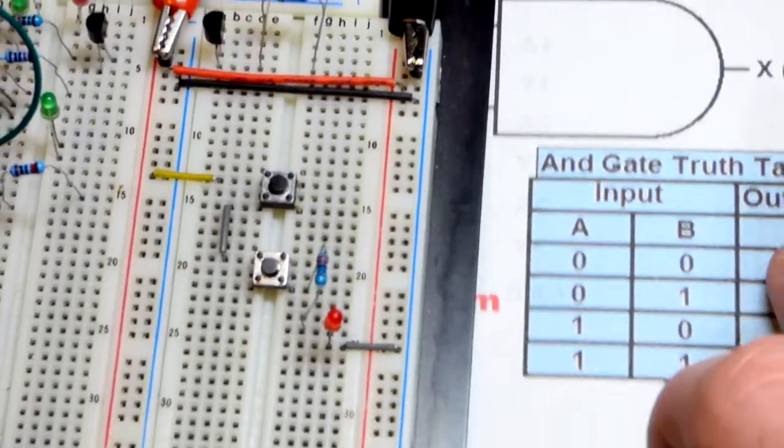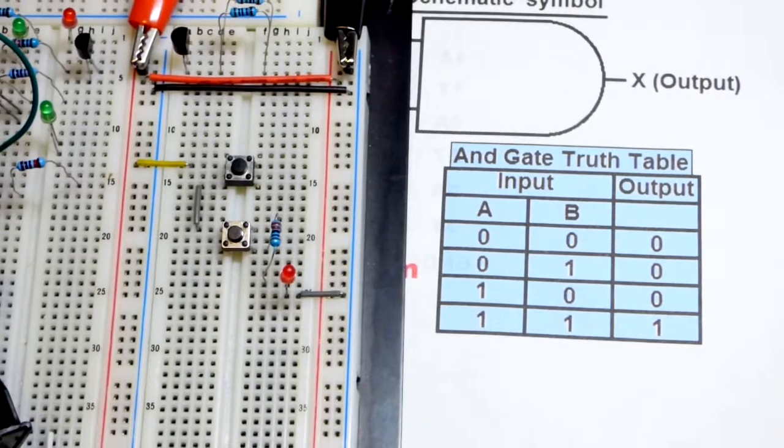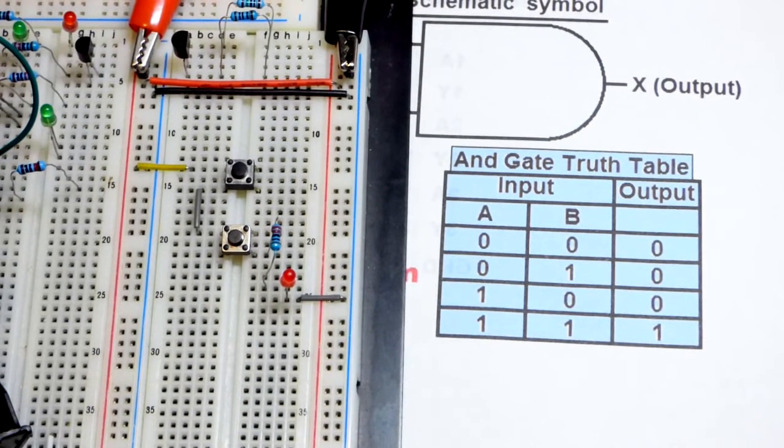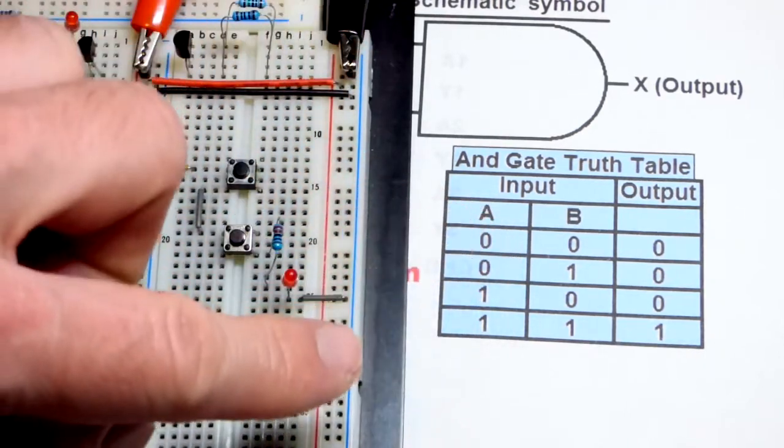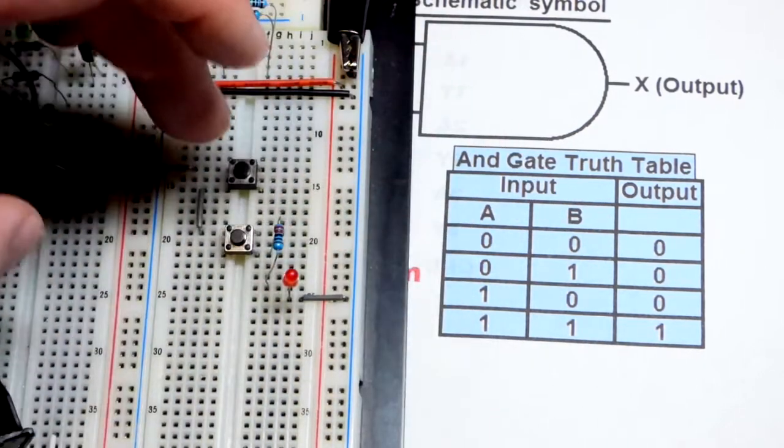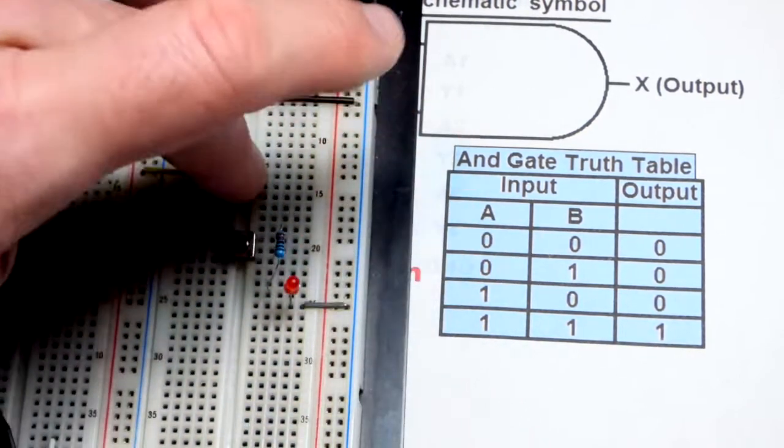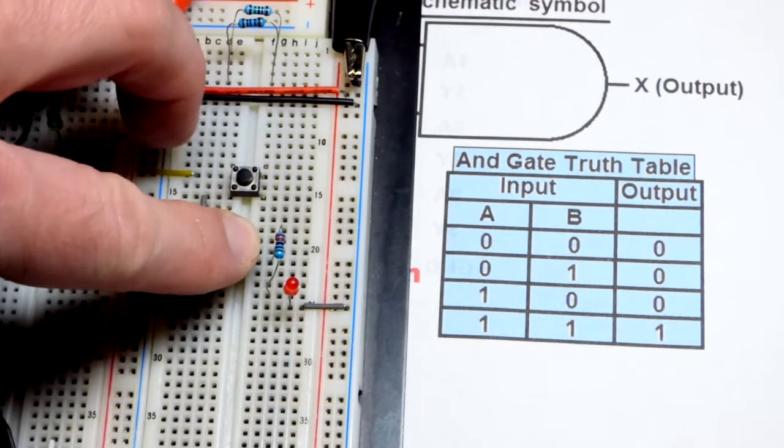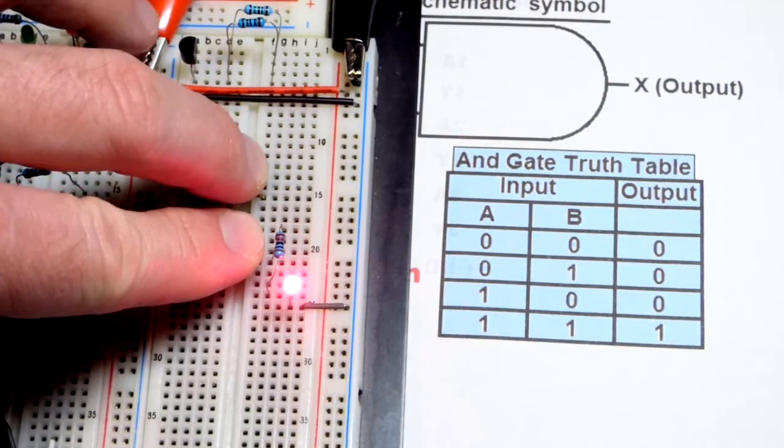And even though this is a pretty simple circuit, and you can probably figure out how it works, we'll demonstrate it. Both of these are open right now. They're off. Zero. And so that's the top one there. We'll press the switch of one of them. And that could be that one or that one. Doesn't matter. Again, we press just one of them, and nothing happens.